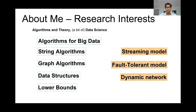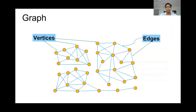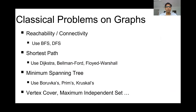Let's now come to today's talk. Let me introduce what a graph is — I'm sure all of you know, but just a brief recap. A graph is a set of vertices and a set of edges. Edges are just connections between pairs of vertices. There are a few classical problems on graphs that you studied in an undergrad algorithm course, like reachability or connectivity, shortest distance algorithms, minimum spanning tree, and then vertex cover, maximum independent set, and so on.